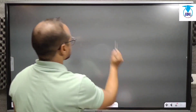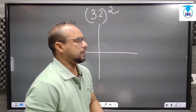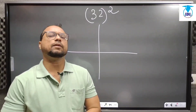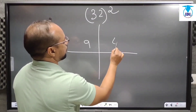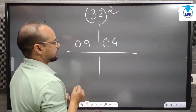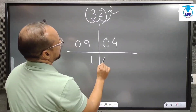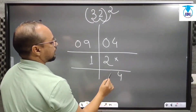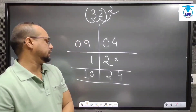Next example: 32 squared. We take the square of 3, which is 9, and the square of 2, which is 4. As I said, always two digits, so we put 09. Next, 3 into 2 into 2: 3 times 2 is 6, and 6 times 2 is 12. We write 12 in this way. Below the last digit no numbers will come. Then we add: 4 here, 0 plus 2 is 2, 9 plus 1 is 10 — carry 1. So the square of 32 is 1024.